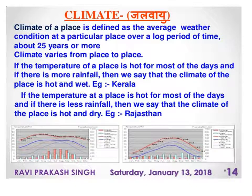The climate of a place is defined as the average weather conditions at a particular place over a long period of time, about 25 years or more. Climate varies from place to place. If the temperature of a place is hot for most of the days and if there is more rainfall, then we say that the climate of the place is hot and wet — for example, Kerala.